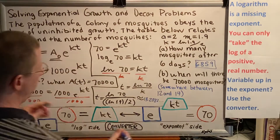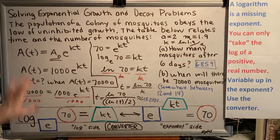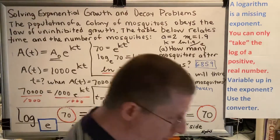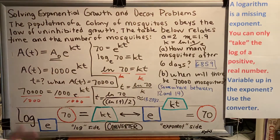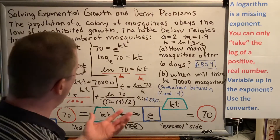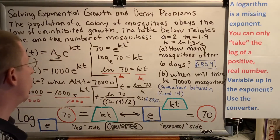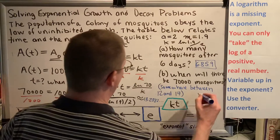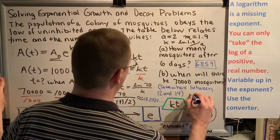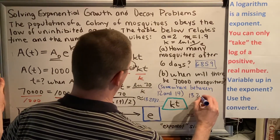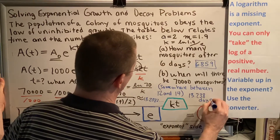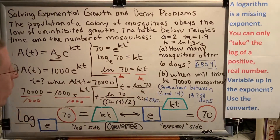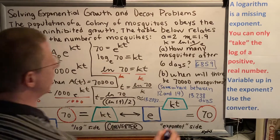We go to the problem instructions to look for rounding instructions. This problem didn't include any, so we'll round to three decimal places. Our answer is 13.238 days — that's how long it will be before there are 70,000 mosquitoes.